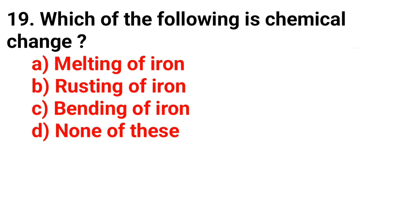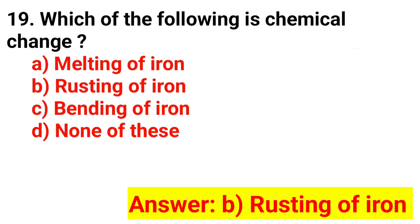Question 19. Which of the following is a chemical change? The answer is Option B: Rusting of iron.